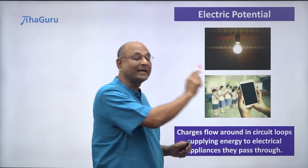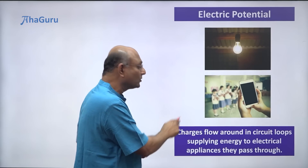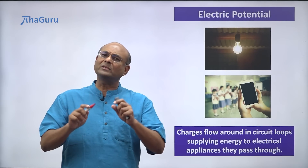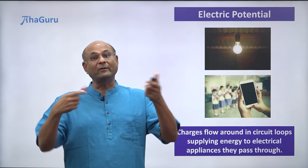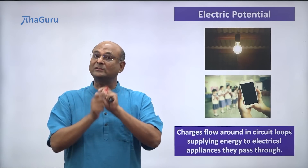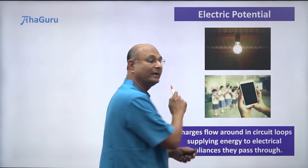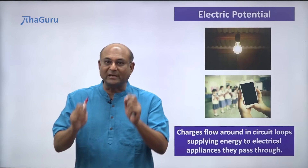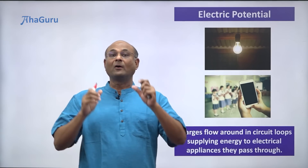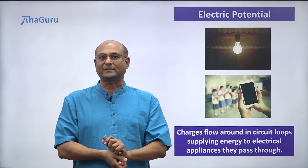As these charges flow around in circuit loops, they transfer energy to electrical appliances. Now how do these charges flow around? Why do they flow around? How do they transfer energy? All these questions have one answer: electric potential. If we understand electric potential really well, we'll be able to answer why charges are moving and how they transfer energy to various objects.